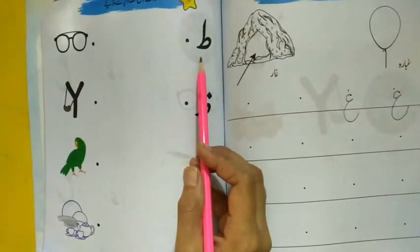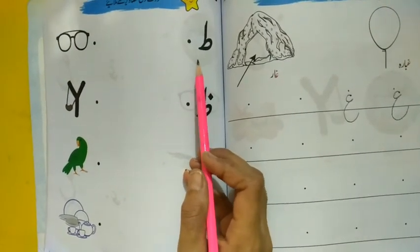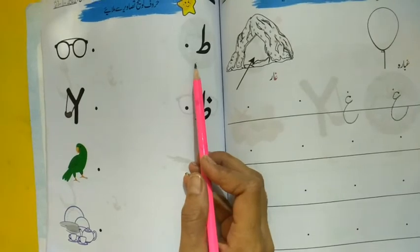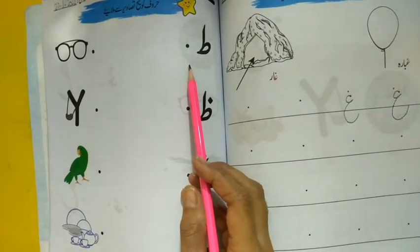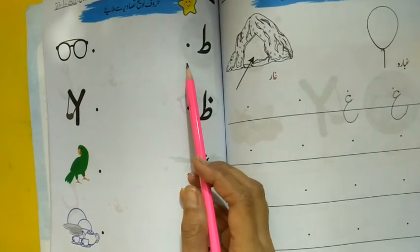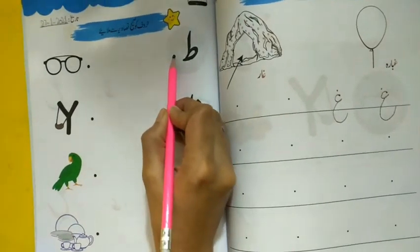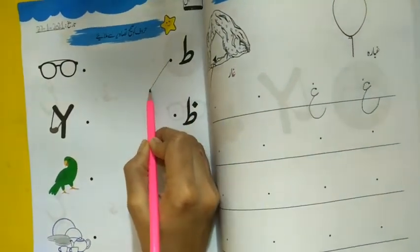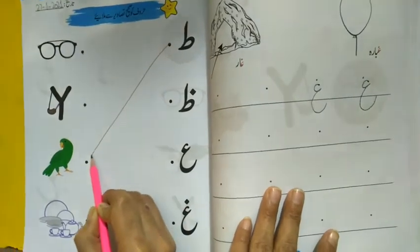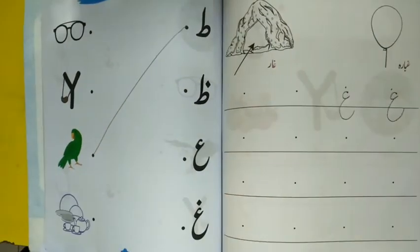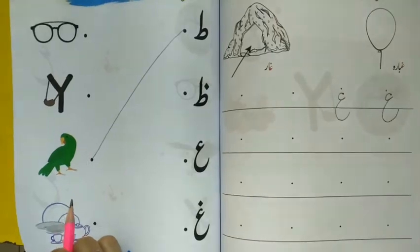Which letter is this? 'To-ein'. Which picture will we match with 'To-ein'? What comes from 'To-ein', dear children? Totha (parrot). Shabash (well done)! Match with 'To-ein'. Totha.